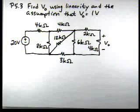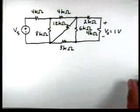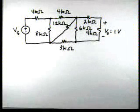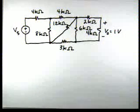And there's our circuit. What we're going to do is assume V0 equals 1 volt, and we're going to work back through the circuit and calculate, I called it Vs, in the circuit. And then by linearity, we know that we can scale the result to find out if the input voltage is 20, what is V0. So let's look at our circuit.